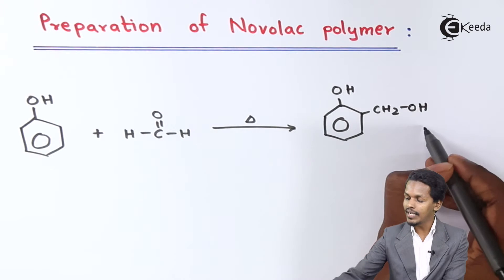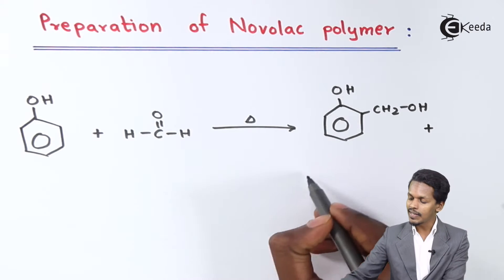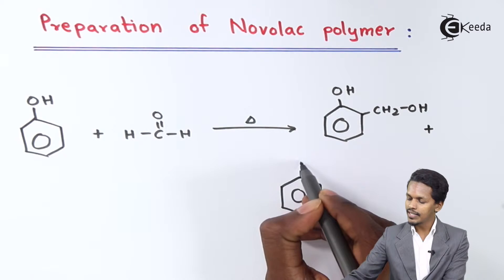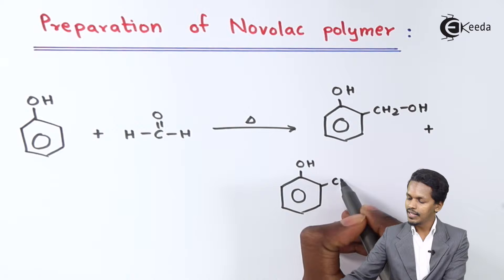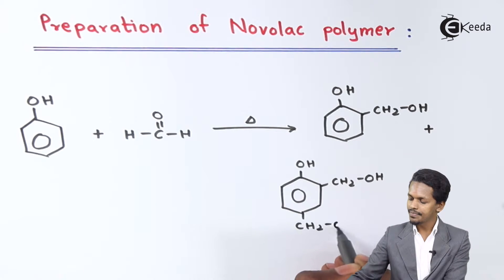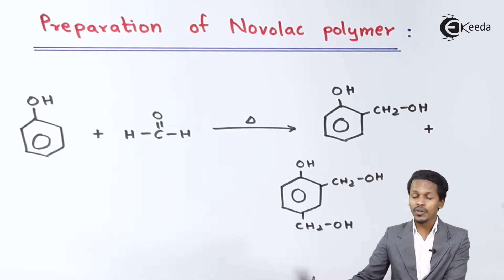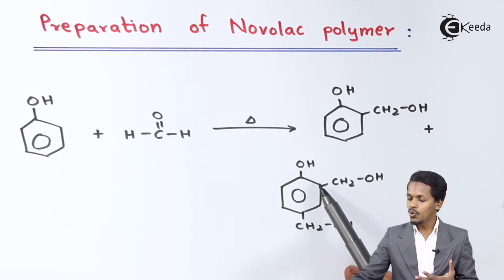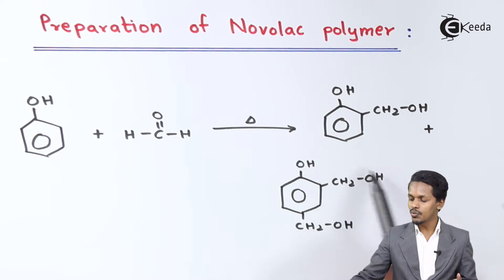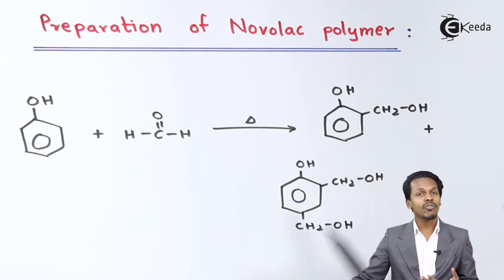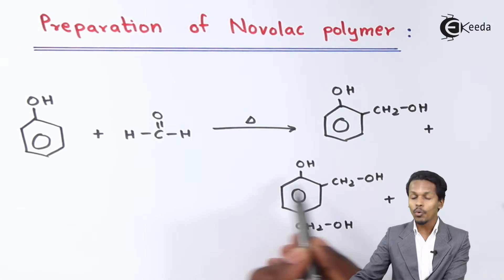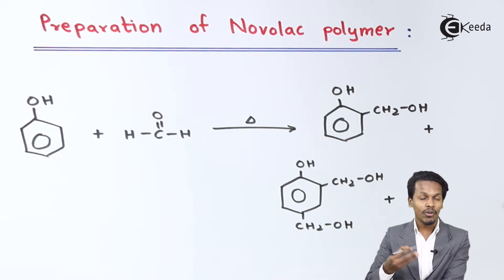That is one of the products we could get. There is another possibility — another product where we have OH here and CH2OH groups at two positions. The name of this product is 2,4-dihydroxymethyl phenol, because carbon number one carries OH, and positions two and four carry CH2OH groups.